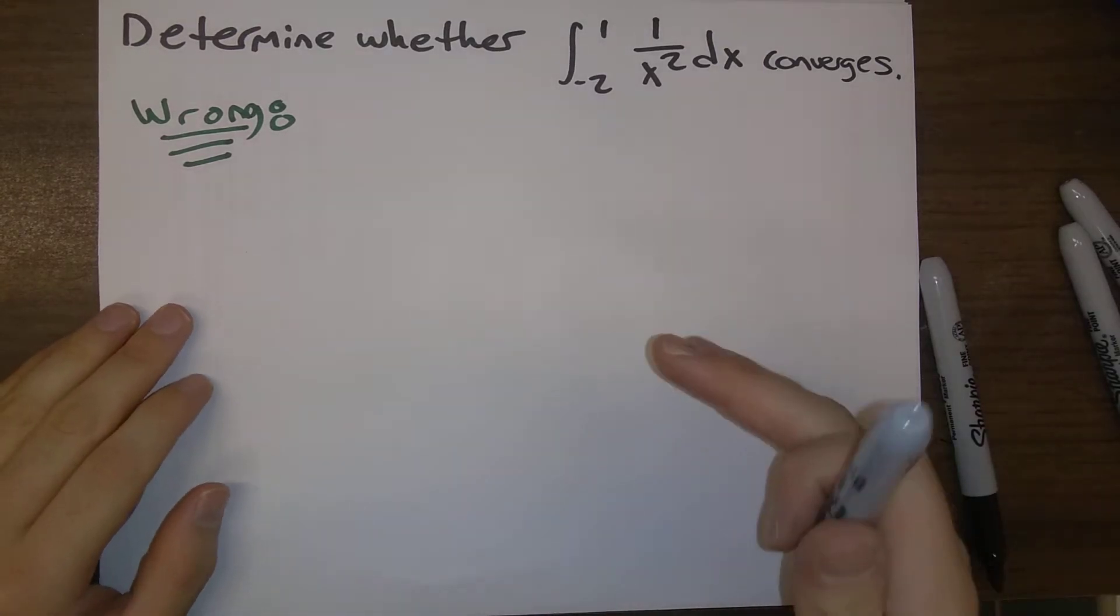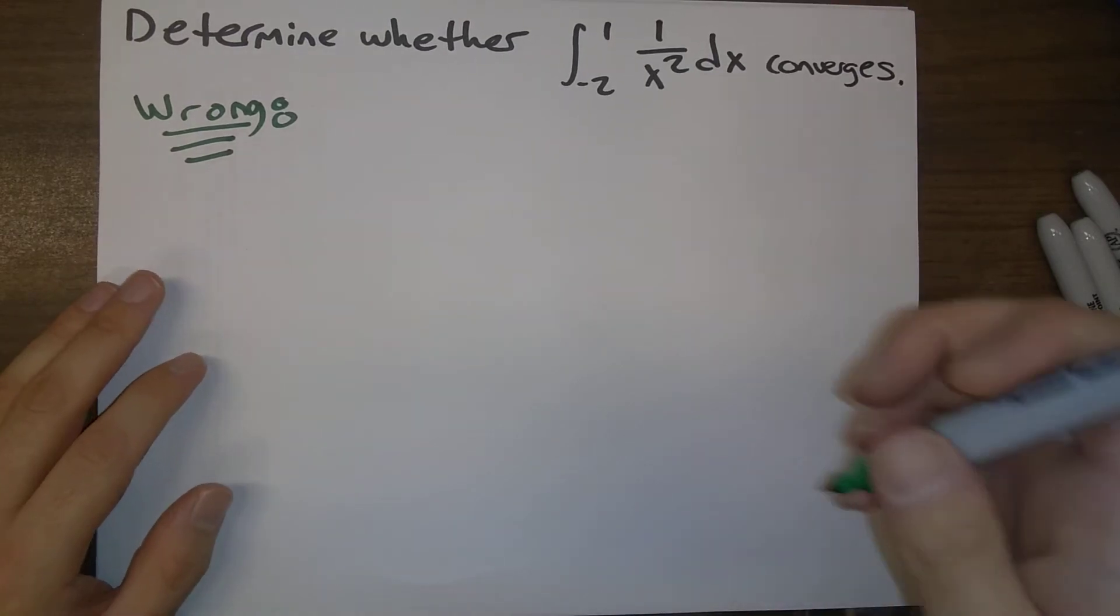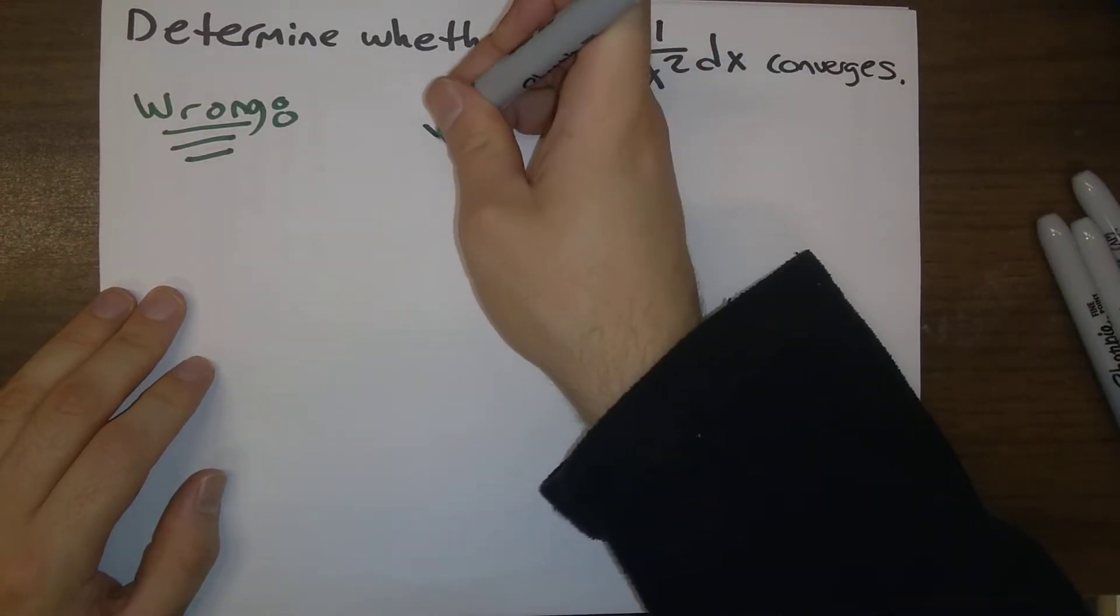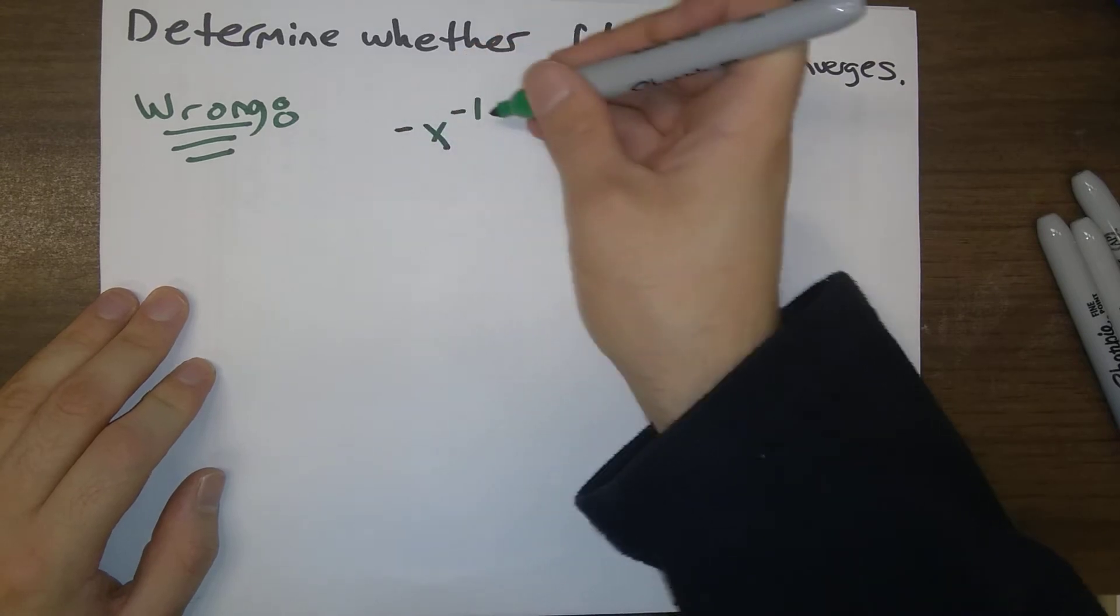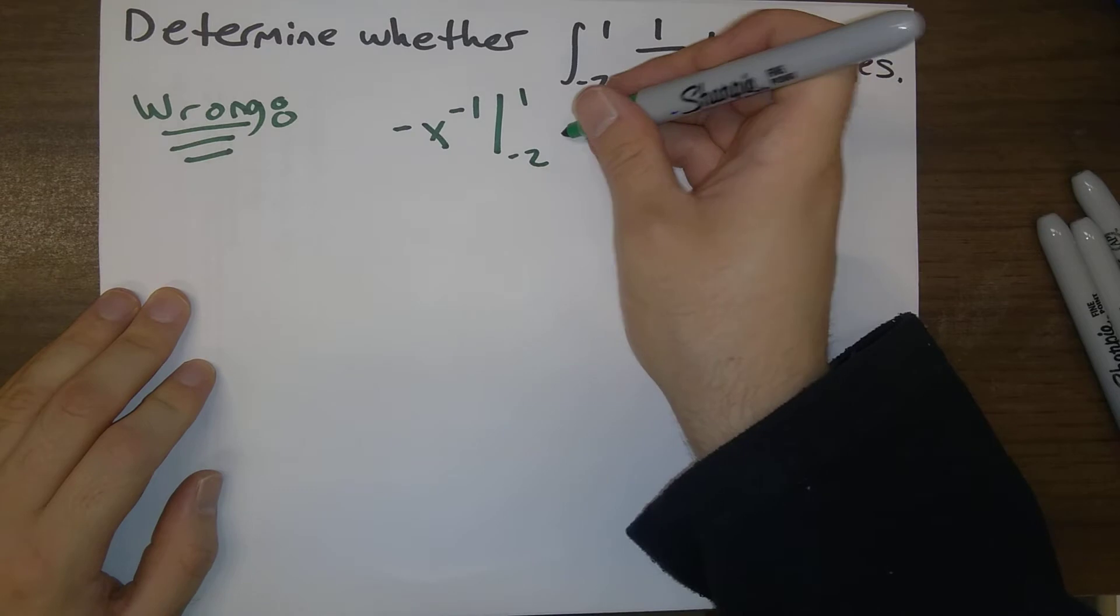So the wrong solution to this problem is just to say what's the antiderivative 1 over x squared? That's x to the minus 2. The antiderivative would be minus x to the minus 1. Plug in minus 2 and 1.